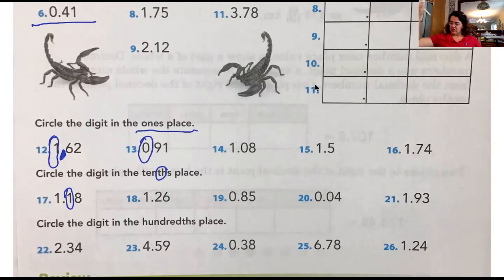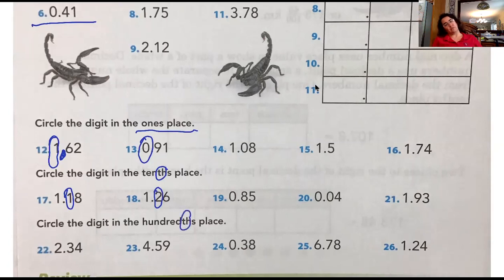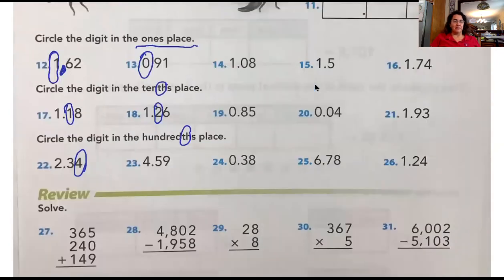You'll do 19, 20, and 21 on your own. Go to the next section, 22 through 26 — we'll do 22 and 23 together. Circle the digit in the hundredths place. Remember, the hundredths place goes two places to the right of the decimal. Two and 34 hundredths — Reagan, what number is in the hundredths place? A four. Good. Four and 59 hundredths — Kylie, what number is in the hundredths place? Nine. Very good — you guys keep going.